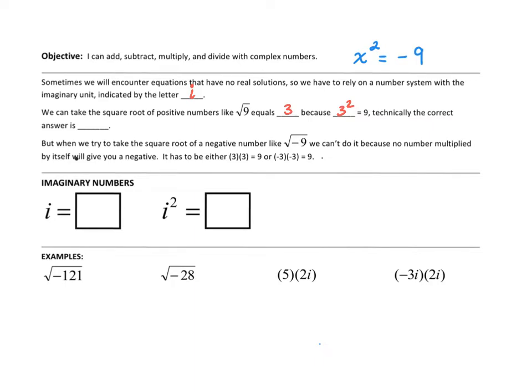We can take the square root of positive numbers like 9 and equals 3, right? Because 3 squared is 9. Technically, the correct answer, like if you were solving x squared equals 9 would be plus or minus 3.